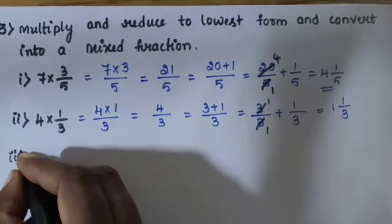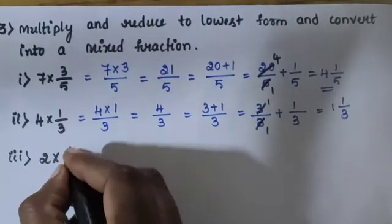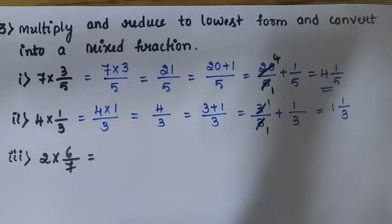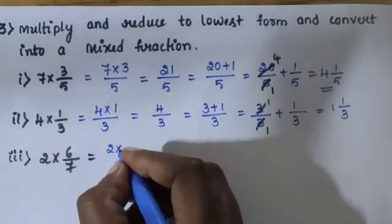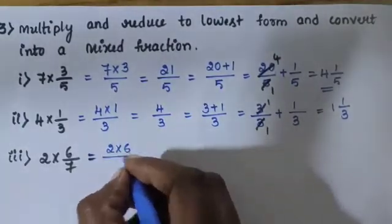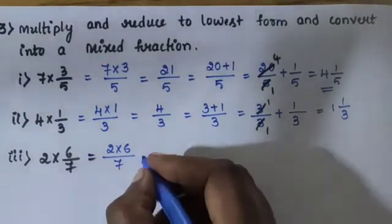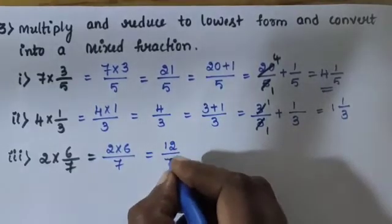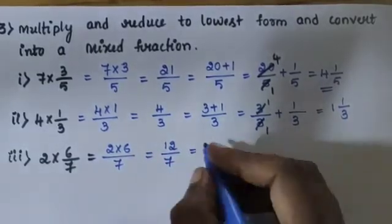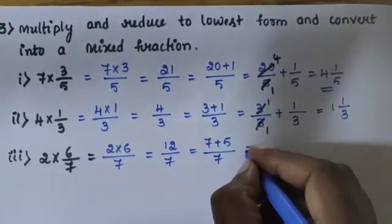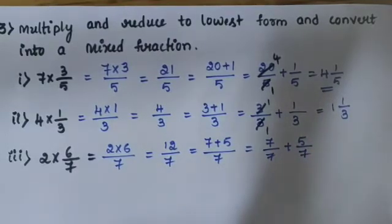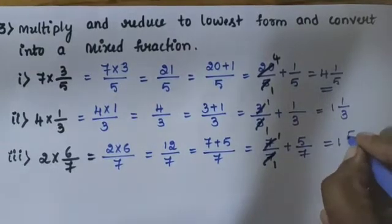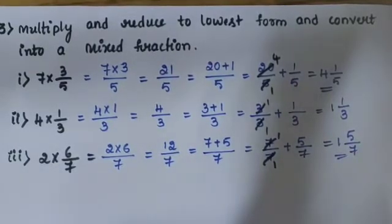Sub-question 3: 2 into 6 by 7. 2 is the whole number, 6 is the numerator, 7 is the denominator. 2 into 6 is 12, divided by 7. Convert: 7 plus 5 divided by 7, so answer is 1 and 5 by 7.